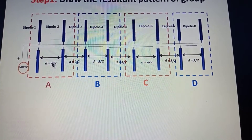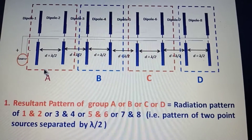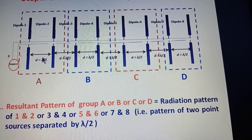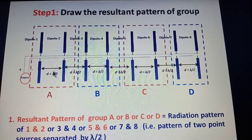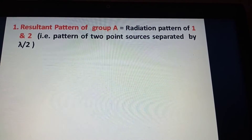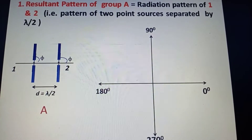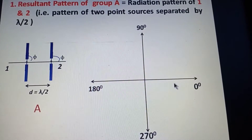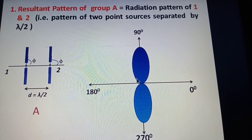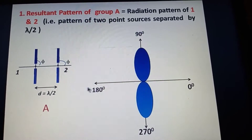In step one, we estimate the resultant radiation pattern of group A (which equals that of B, C, or D — they are all the same). Group A consists of two isotropic point sources separated by lambda/2, which we already estimated in a previous session. The resultant pattern has nulls at 0° and 180° and maxima at 90° and 270°, giving two maxima and two nulls.